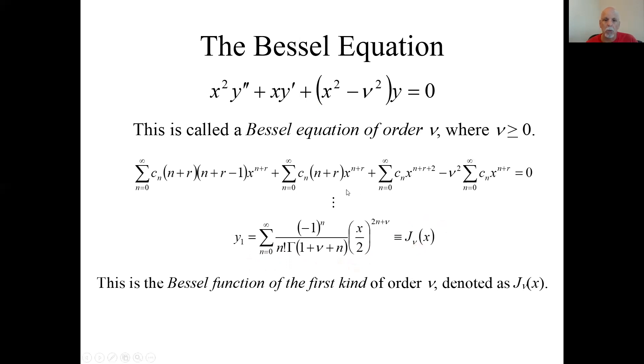The other indicial root would be minus nu. So that would give you J sub minus nu, which leads to the question you might ask: is that solution linearly independent of this solution? Because if that's true, you've got the two particular solutions, you would have the general solution. But anyway, this thing is called Bessel function of the first kind of order nu. I'm just going to call it J sub nu.